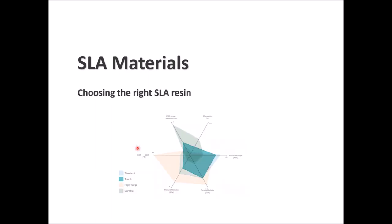A radar-style chart shows a different representation of properties for SLA resins including standard, tough, high temperature, and durable. If you care about impact strength, durable resin gives the best results. For temperature resistance, the high temperature resin is the best choice while still performing above medium for flexural and tensile modulus. For tensile strength, standard resin leads. These visual charts help you make a fast decision on which material best fits your specific application.